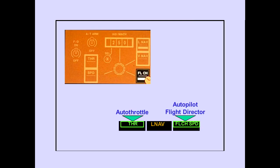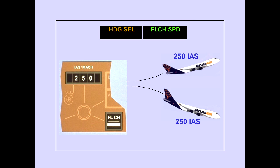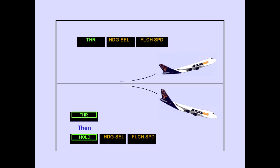Pushing the flight level change switch engages the autothrottle and the autopilot flight director in the flight level change mode. While in the flight level change mode, the autopilot uses the elevator to maintain the speed displayed in the IAS mock window. The SPD in the pitch mode display indicates that the elevator is controlling speed. Adding thrust will allow the airplane to climb. Reducing thrust will allow the airplane to descend. Thrust is displayed for a flight level change climb, and thrust or idle is displayed for a descent.